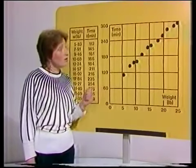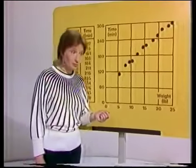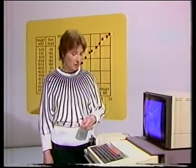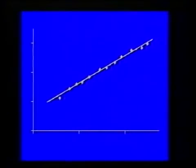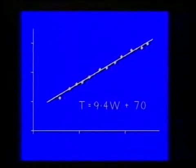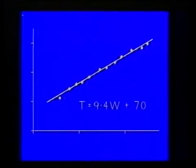So what's the straight line which fits these points, and what's its equation? I've programmed the computer to work out the best straight line for these points. Here it is — it doesn't look too bad a fit at all. We can also find its equation from the computer: it's T equals 9.4W plus 70. We could use this equation to work out the cooking time for a turkey of any given weight.